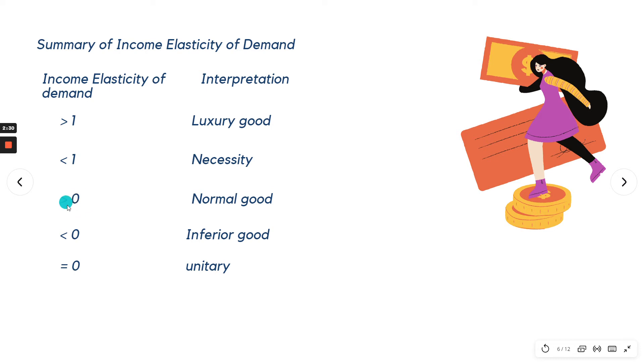If it is greater than zero, meaning if it's positive, it is a normal good. If it is less than zero or negative, that's inferior good. If it is equal to zero, that's unitary.